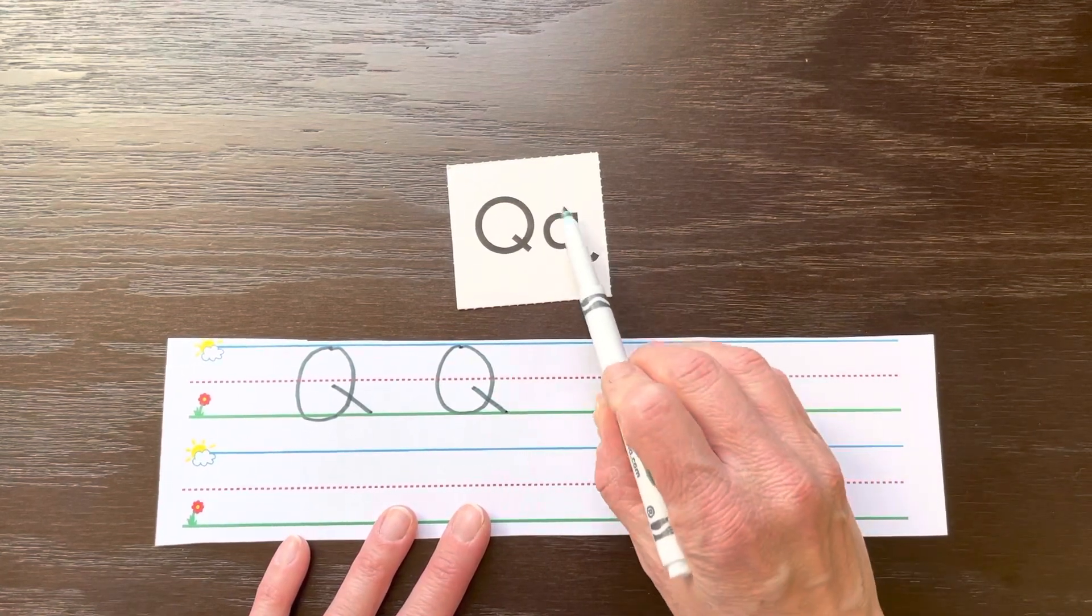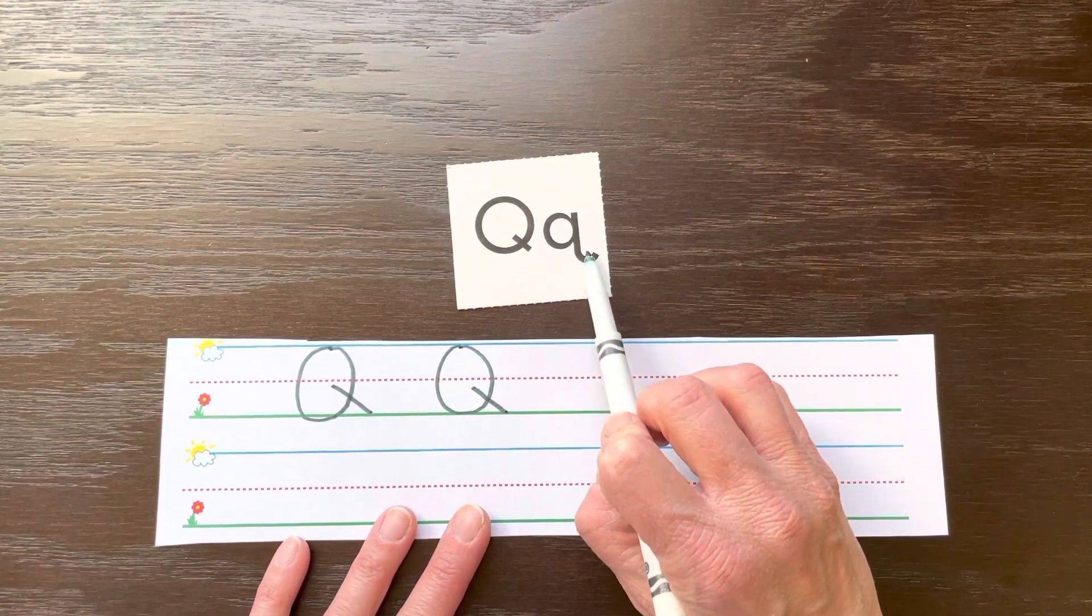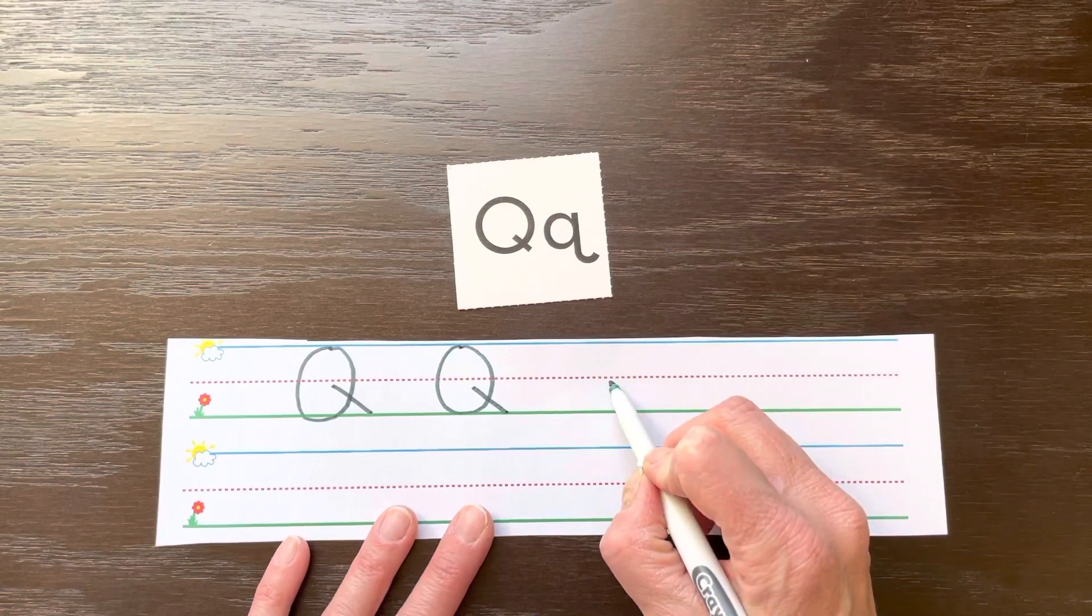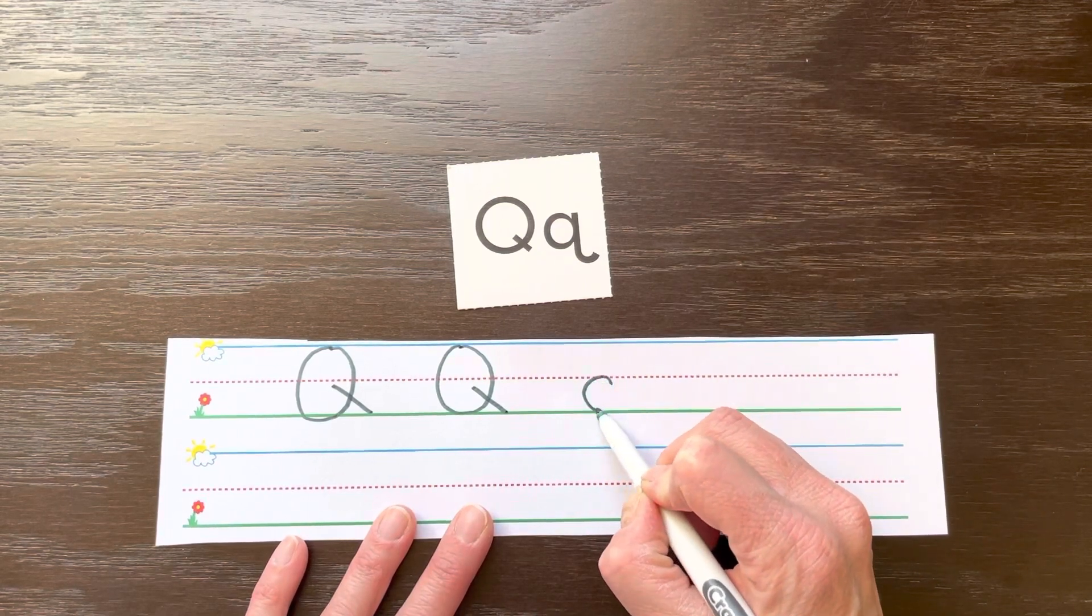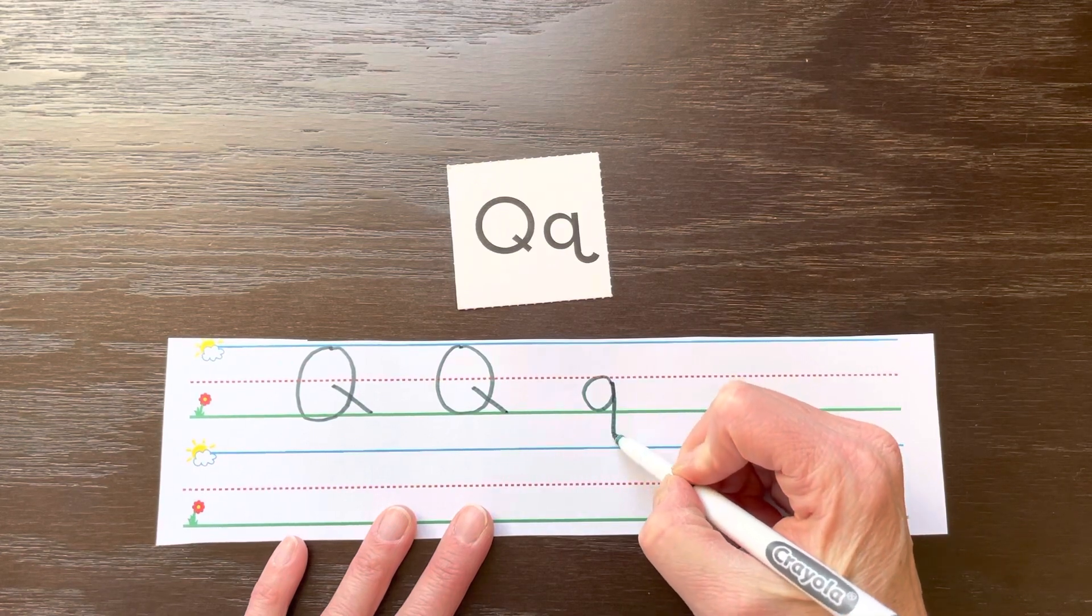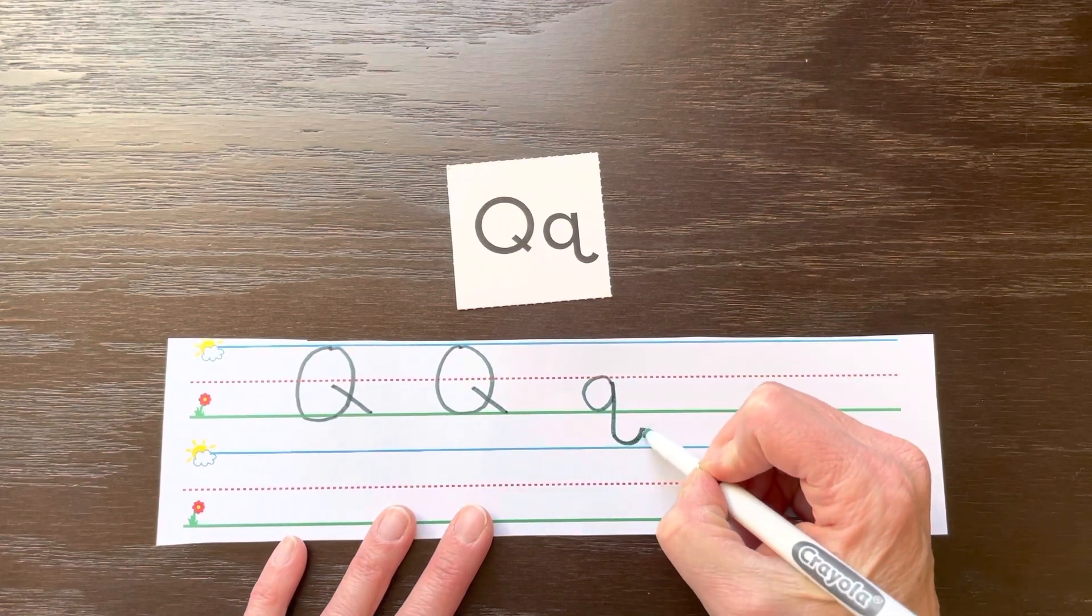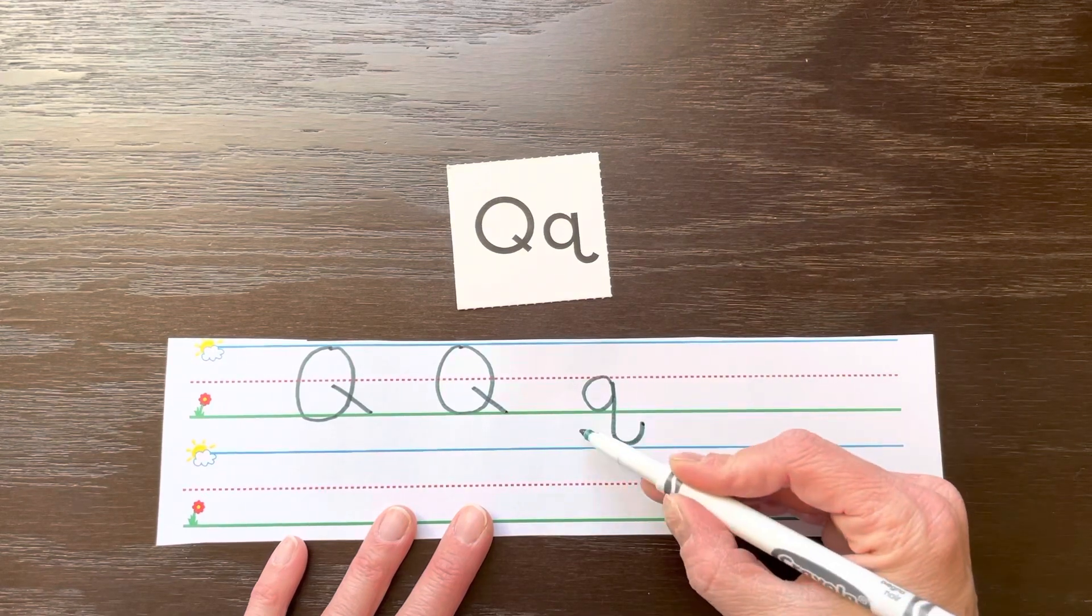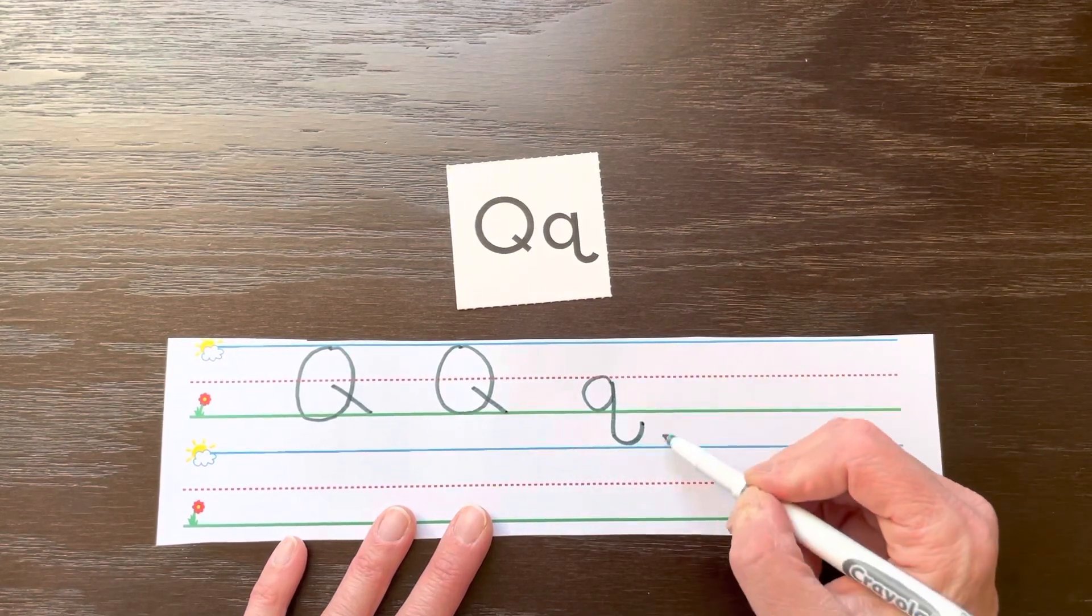So this is a magic C letter. So you start in the middle and you make your magic C. You close it up and then we're going to go down into the ground and hook away from the letter. So it doesn't hook under like a letter G, it hooks away.